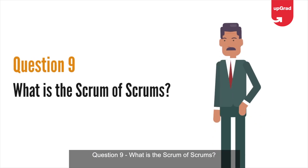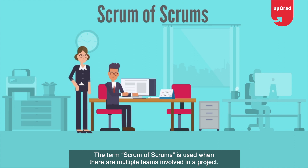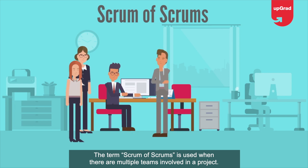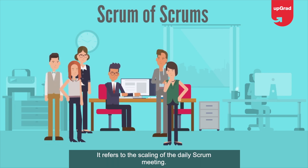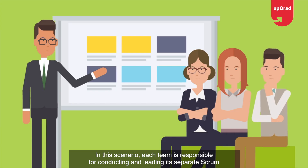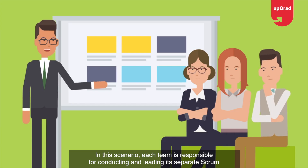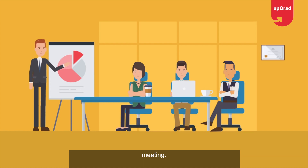Question 9: What is the Scrum of Scrums? The term Scrum of Scrums is used when there are multiple teams involved in a project. It refers to the scaling of the daily Scrum meeting. In this scenario, each team is responsible for conducting and leading its own separate Scrum meeting.